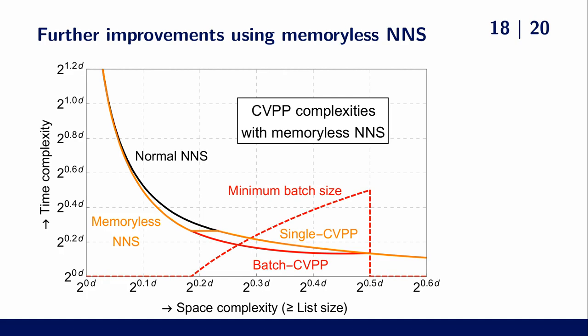This leads to the following time memory trade-off curve for batch CVP. Using our observation, it significantly lowers the required batch size, even all the way down to a regular CVP with a single target in the low memory regime.